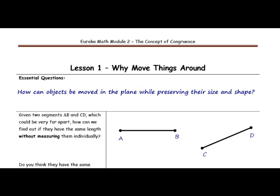Given two segments, AB and CD, which could be very far apart, how can we find out if they have the same length without measuring them individually? Do you think they have the same length?